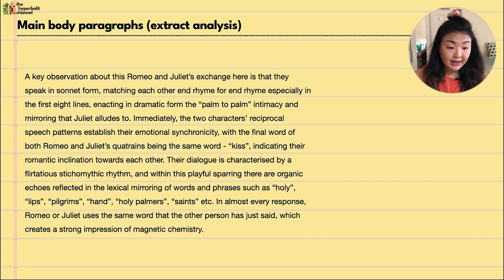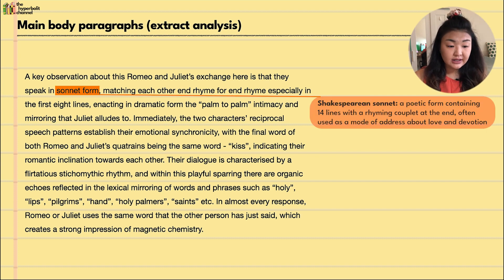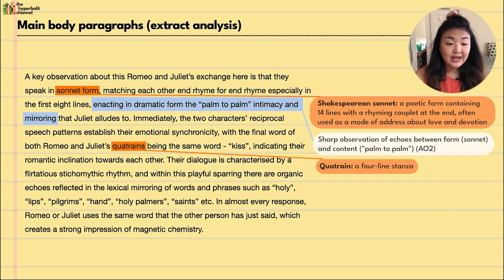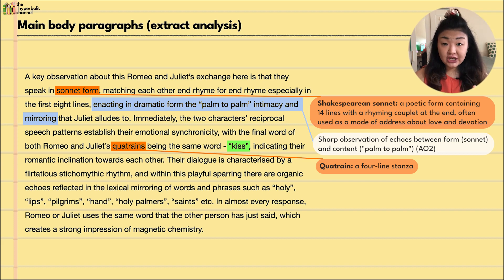The first main body paragraph dives into the extract analysis. A key observation about the Romeo and Juliet exchange is that they speak in sonnet form — super important to identify as a technical feature — matching each other end rhyme for end rhyme, especially in the first eight lines, enacting in dramatic form the palm-to-palm intimacy and mirroring that Juliet alludes to. The two characters' reciprocal speech patterns immediately establish their emotional synchronicity.